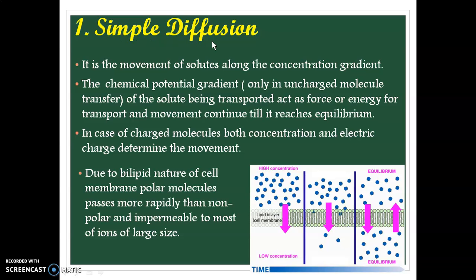First is simple diffusion. Diffusion is the movement of solutes from high concentration to low concentration. In simple diffusion, it is the movement of solutes along the concentration gradient. The chemical potential gradient of the solute being transported acts as the driving force for transport and movement until it reaches equilibrium.